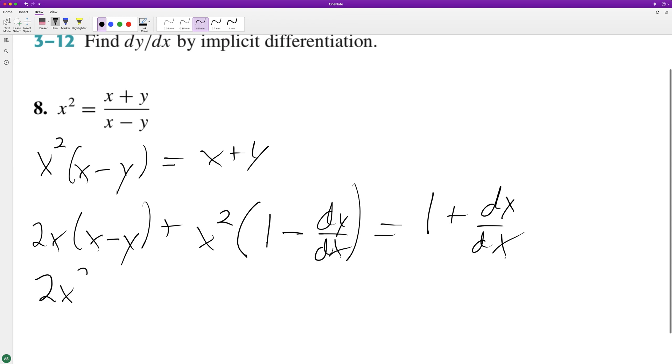So this becomes 2x squared minus 2xy plus x squared minus x squared dy/dx equals 1 plus dy/dx.